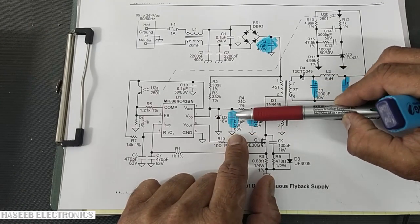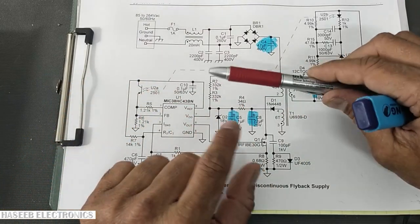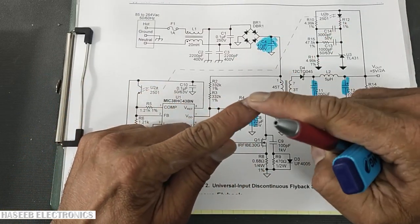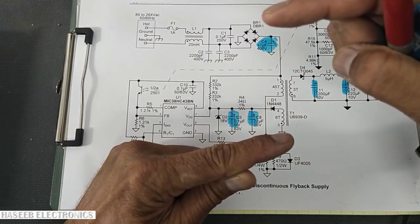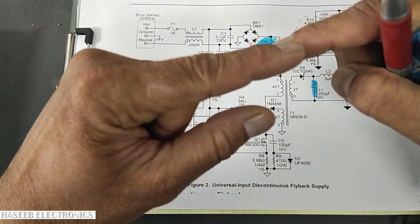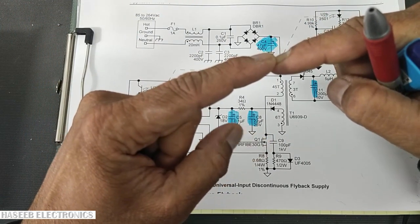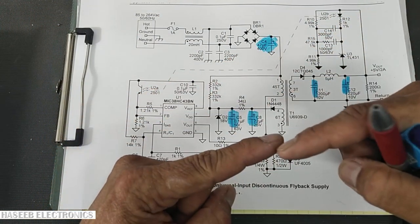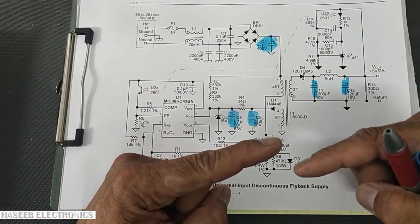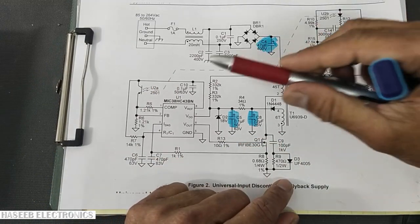For each IC it has its specified voltage level, so under voltage UVLO lower limit to upper limit, this is the working window. If the voltage will exceed from this upper limit, that is called OLP overload protection. If the voltage will drop below the UVLO threshold, that is called under voltage lockout. In both cases, the IC will shut down.